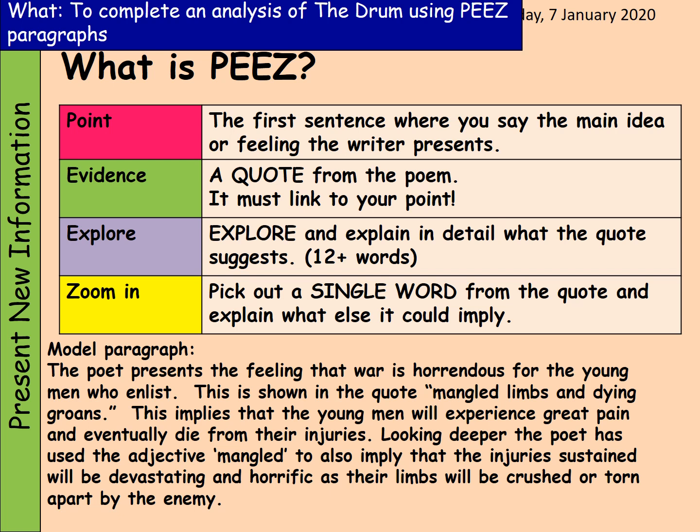What I've done here is I've also added a model paragraph. I want you to write this model paragraph so that you have it to reference when you come to write your own PEEZ paragraph. The model paragraph reads: 'The poet presents the feeling that war is horrendous for the young men who enlist. This is shown in the quote: mangled limbs and dying groans. This implies that the young men will experience great pain and eventually die from their injuries. Looking deeper, the poet has used the adjective mangled to also imply that the injuries sustained will be devastating and horrific, as their limbs will be crushed or torn apart by the enemy.' Pause the video here and copy this model paragraph.